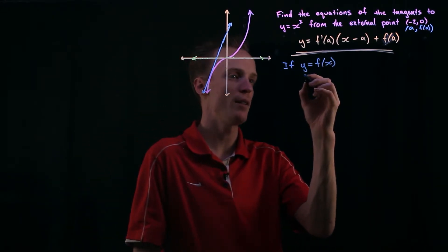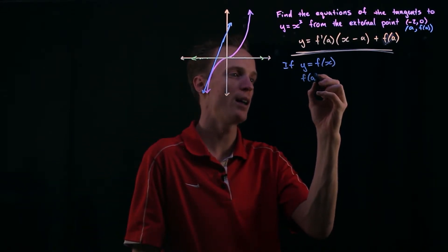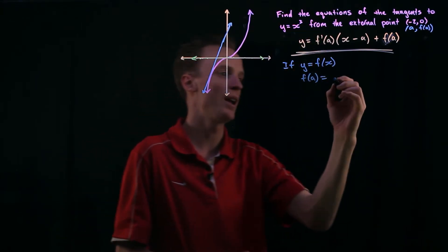What I need to know is the f of a. So the f of a is going to be substituting a into this so it'll be a cubed.